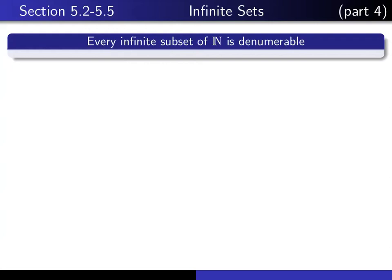This is part 4 of our series of lectures on infinite sets, and in this lecture I'm going to prove that every infinite subset of the natural numbers is denumerable. We proved a while back that the set of even natural numbers is also denumerable, and that illustrates this theorem. The set of even natural numbers is an infinite subset of the natural numbers, yet it has exactly the same cardinality as the natural numbers. This theorem says there's no way to get an infinite subset that's any less in size, from the point of view of cardinality, than the entire set of natural numbers.